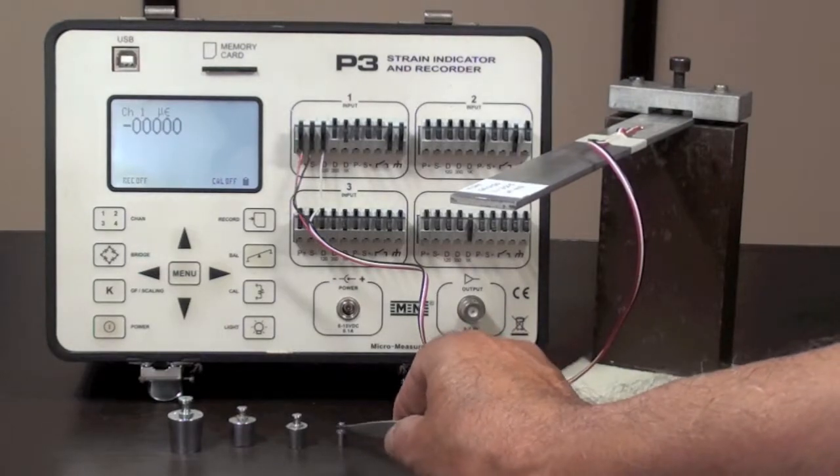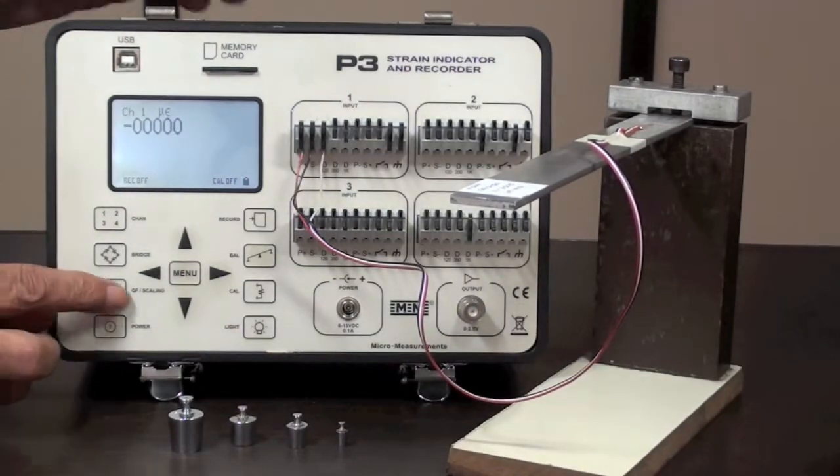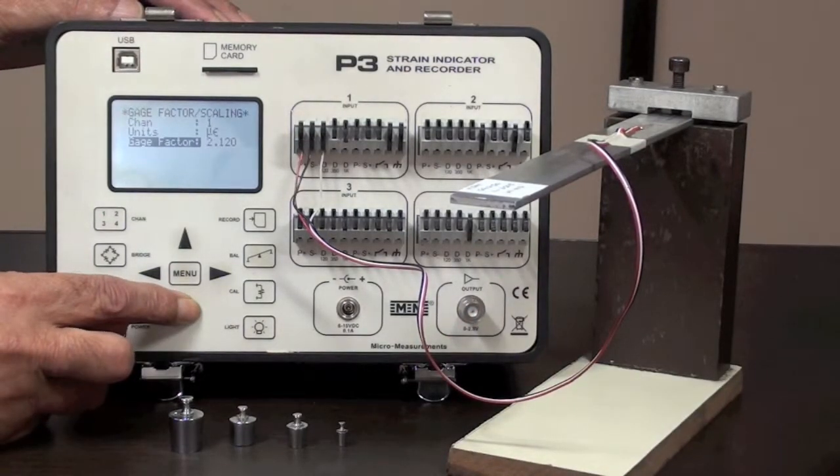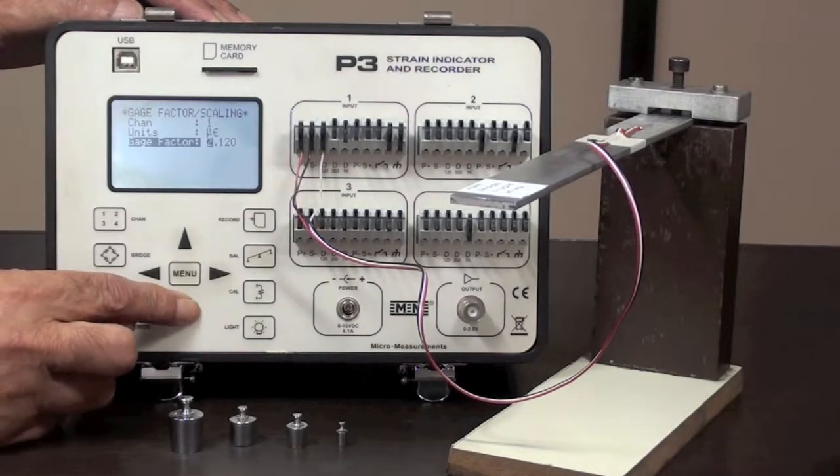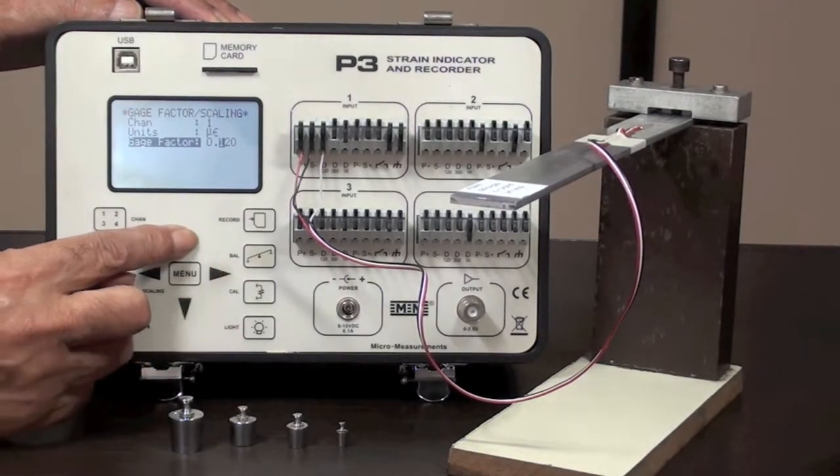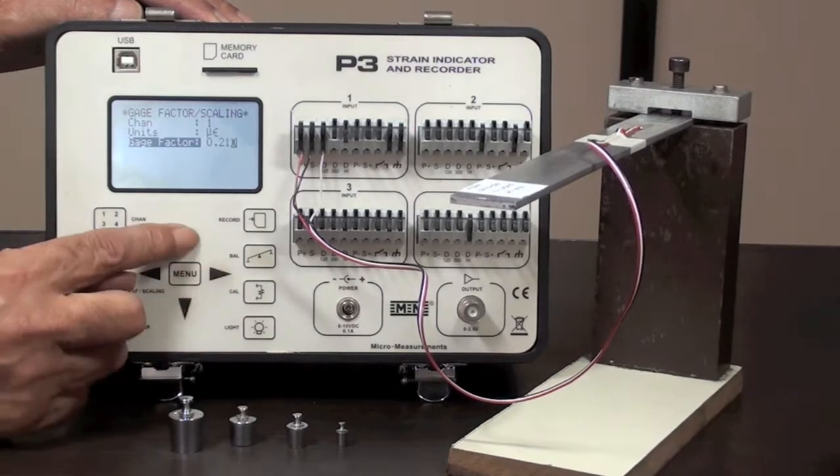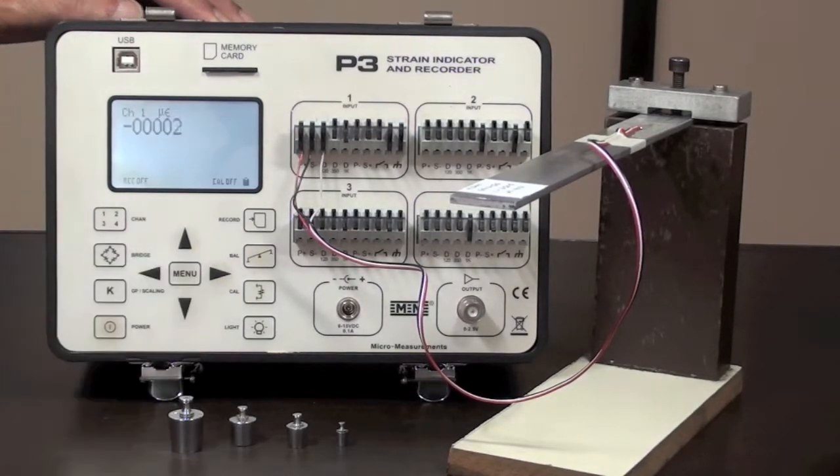However, we can increase the sensitivity of model P3 by 10 times by setting the gauge factor 10 times lower to 0.212.